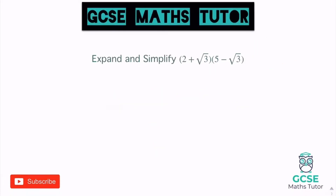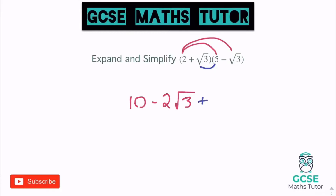On to the next question — another double bracket, different to the one above. They're not the same brackets this time. So I'm going to follow the same process. 2 times 5 is 10. 2 times negative root 3 is negative 2 root 3. Root 3 times 5 is positive 5 root 3 — because we've got a positive symbol in front of our root 3 — so plus 5 root 3.